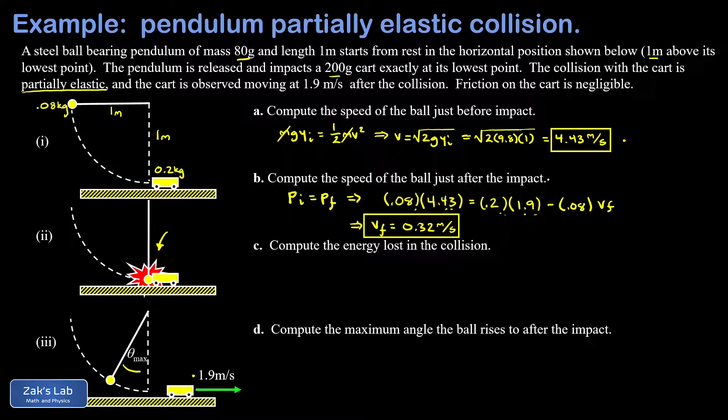Just a note on the signs here: we've already taken care of the fact that the pendulum bob was rebounding leftward by putting a minus sign into the momentum equation. That means V final stands for the speed of the pendulum bob, not the velocity. So we know it's moving to the left and the speed is 0.32 meters per second.